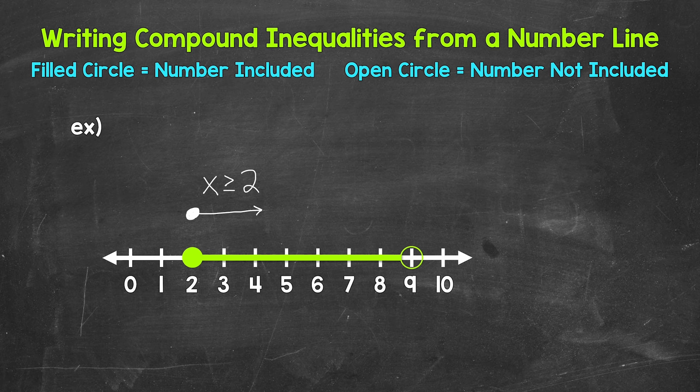Next, we have an open circle at 9. So 9 is not included. Then we have the numbers to the left, so less than 9. So an open circle at 9, and then the numbers to the left. So our inequality here is x is less than 9.